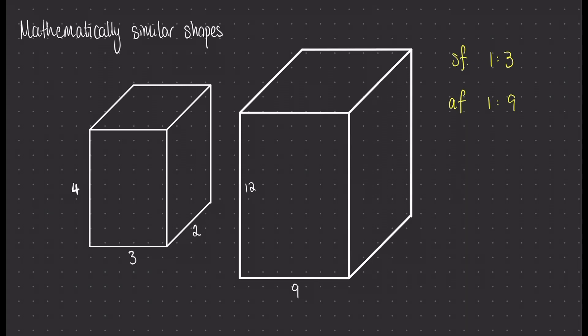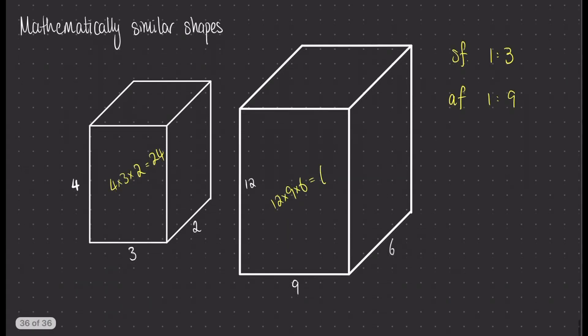I can do a quick calculation for the depth of the second cuboid: that's going to be 6 deep. Now I can do the area calculation and then times by the depth to work out the volume of each shape. The shape on the left has volume 4 times 3 times 2, which is 24. On the right-hand side the same calculation gives 648.